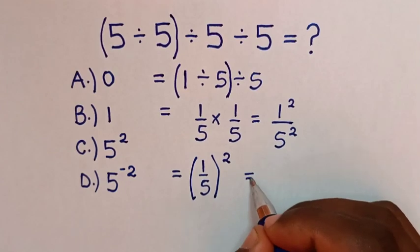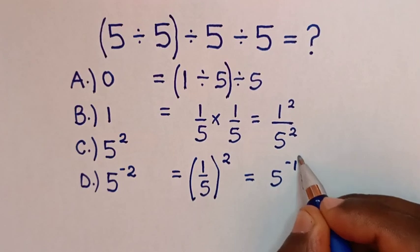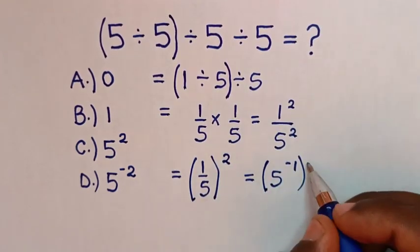Then it will be equal to, 1 over 5 is the same as 5 to the power of negative 1, then bracket, power of 2.